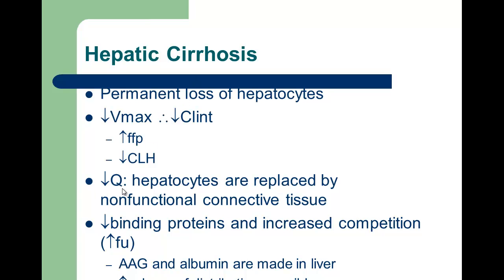In cirrhosis, we will also see a decrease in blood flow because the hepatocytes are replaced by non-functional connective tissue and therefore blood cannot flow through there. So you'll see a decrease in liver blood flow, which will again decrease the clearance of high extraction drugs. We'll also see a decrease in binding proteins that are available, increasing the free fraction. Both AAG and albumin are made in the liver and therefore will not be made in the quantities normally available.